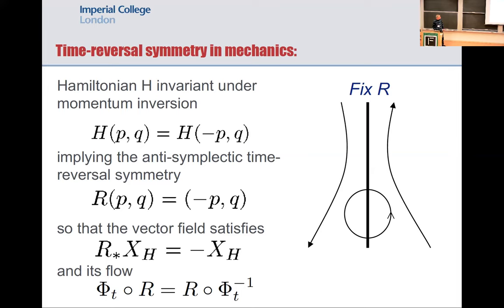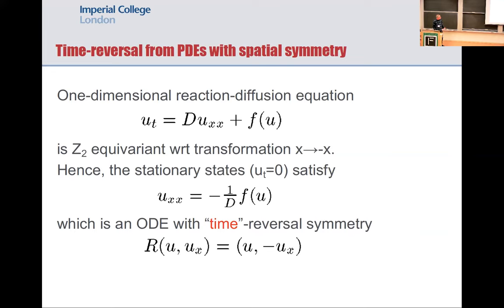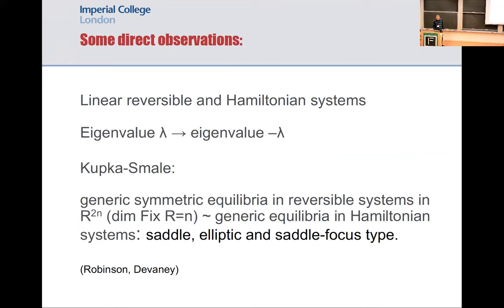Sometimes people call these equivariances, where things are time-preserving symmetries; you also have time-reversing symmetries, which are very common in Hamiltonian systems. I'd like to advertise some things I've also been doing and give a bit of impression that there's something to be appreciated here. There's not only Hamiltonian systems — also in reaction-diffusion PDEs with spatial symmetry, looking at stationary solutions, we often get time reversal symmetry. People have worked on that in the last few decades. People noticed early on that there are similarities between reversible and Hamiltonian systems: for instance, if you look at steady states and see eigenvalue lambda of the linearization, you also get eigenvalue minus lambda — true for reversible systems and also for Hamiltonian systems.